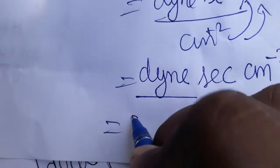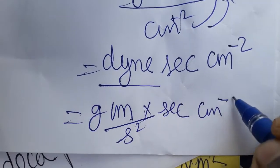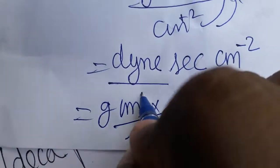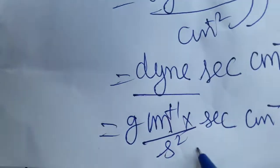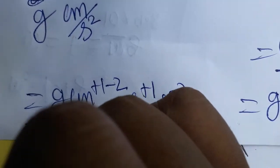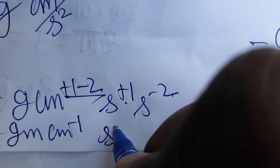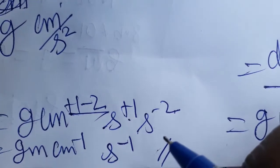We can further expand dyne: dyne is a force, and force equals mass × acceleration. In CGS, mass is in gram and acceleration is centimeter per second squared. So substituting: gram × (centimeter/second²) × second × centimeter⁻². Simplifying the centimeter terms: cm¹ × cm⁻² = cm⁻¹. And second terms: s⁻² × s¹ = s⁻¹. The final unit is gram·centimeter⁻¹·second⁻¹, which is the unit of 1 Poise.